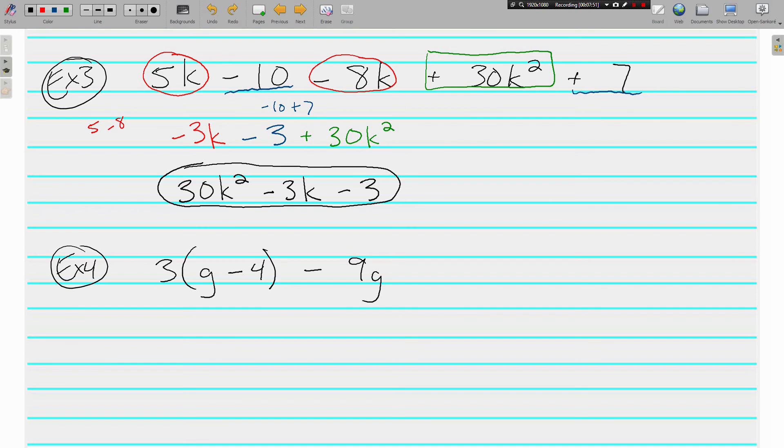Example 4, we need to use the distributive property before we can combine our like terms. So we're going to do 3 times g gives us 3g. And 3 times negative 4 gives us negative 12. Then we still have the minus 9g. Now that we've distributed, we can combine our like terms.